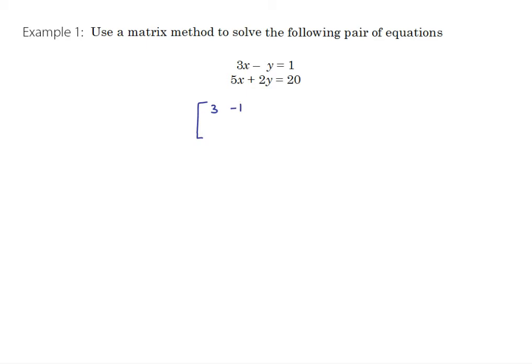So 3, negative 1, 5, 2 and multiplying those by x and y and that's going to equal 1 and 20. You should be able to fairly easily and quickly in your head imagine multiplying those back out and checking that they will give you 3x minus y and 5x plus 2y.